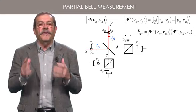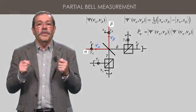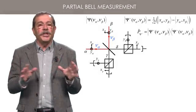The measurement is based on devices you know well. Firstly, a beam splitter insensitive to polarization couples the input modes alpha and beta to the output modes gamma and delta.